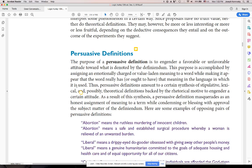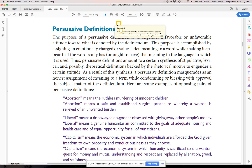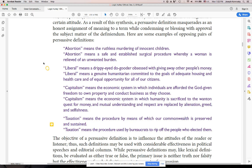Persuasive. This is pretty easy. The purpose of a persuasive definition is to engender a favorable or unfavorable attitude towards what is denoted by the definiendum. This is just easy to see. When you're eliciting an emotive response to somebody, instead of engaging in pure reasoning, you're trying to elicit an emotional response. You're using language that's inflected to do just that.